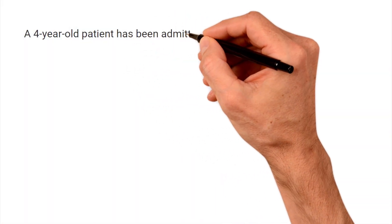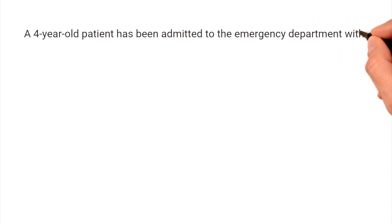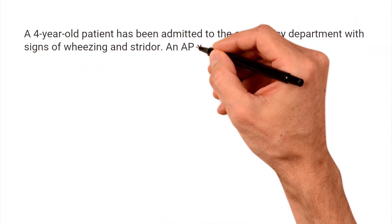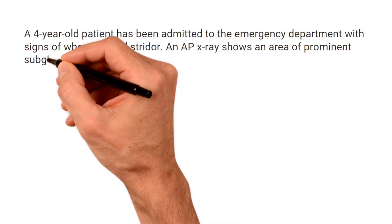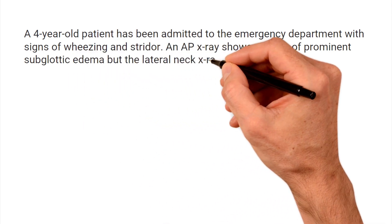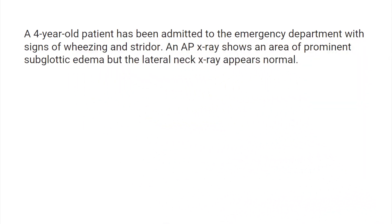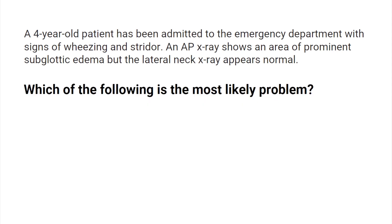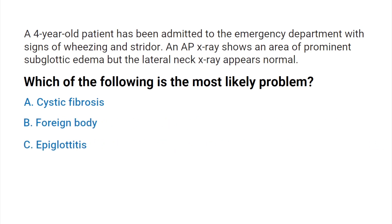A four-year-old patient has been admitted to the emergency department with signs of wheezing and stridor. An AP x-ray shows an area of prominent subglottic edema, but the lateral neck x-ray appears normal. Which of the following is the most likely problem? A) Cystic fibrosis, B) Foreign body, C) Epiglottitis, or D) Croup. Do you know the answer? Let's break it down.